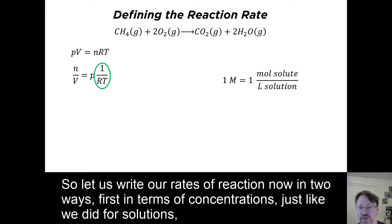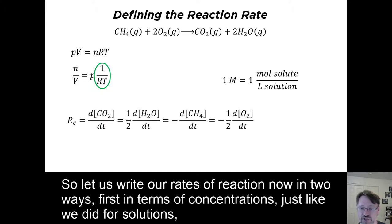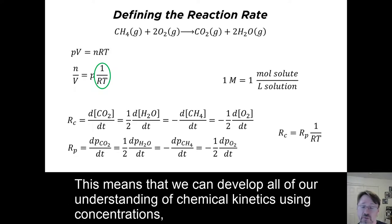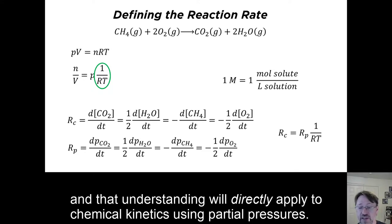So let us write our rates of reaction now in two ways. First, in terms of concentrations, just like we did for solutions. And second, in terms of partial pressures. This way, the two rates are related just by that same proportionality constant. This means that we can develop all of our understanding of chemical kinetics using concentrations. And that understanding will directly apply to chemical kinetics using partial pressures.